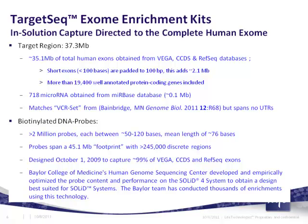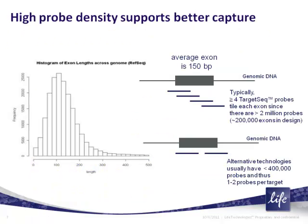A histogram of exon length relative to frequency shows the average exon is about 150 bases long. This size is well-matched to SOLiD libraries, which have targeted insert lengths of 150 to 180 bases, and also to the probe length — our average probe is about 75 base pairs — giving good opportunity for the probe to overlay and represent a significant portion of the target.